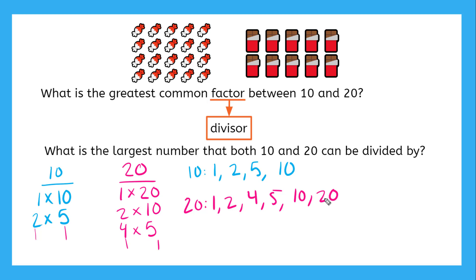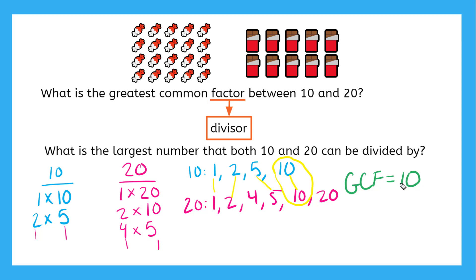So let's take a good look at these two lists. We need to find the largest number that is in both of these lists. It looks like they both have a 1, they both have a 2, they both have a 5, and they both have a 10. And we know that 10 is the largest number that's matching in these two lists. So that tells us that the greatest common factor, or the GCF, of 10 and 20 is going to be equal to 10. And that would mean that Sam can give 10 friends the same amount of candy. Each friend would get 2 candies and 1 chocolate bar.